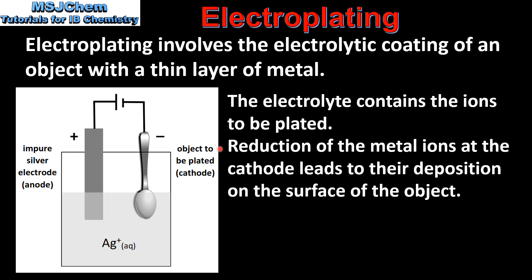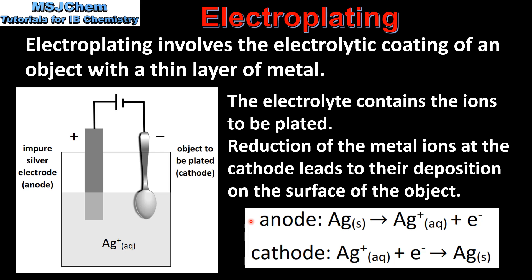The reduction of the metal ions at the cathode leads to their deposition on the surface of the object. Here we have the equations at the anode and the cathode. At the anode, the silver metal is oxidized to form silver ions. At the cathode, the silver ions are reduced to form silver metal which is deposited on the spoon.